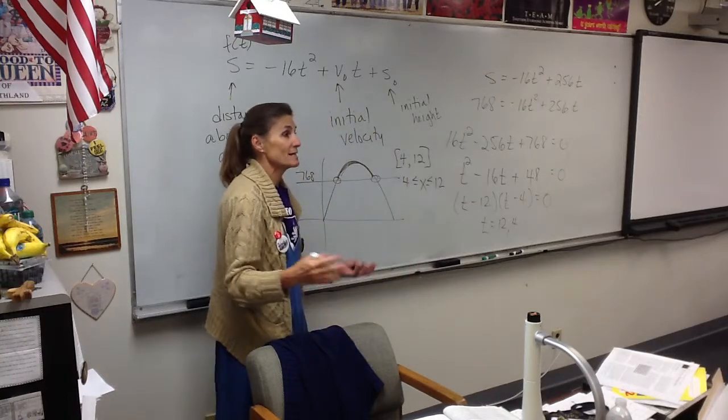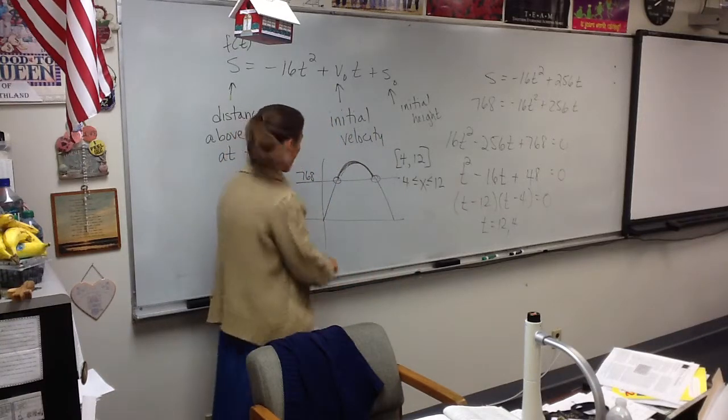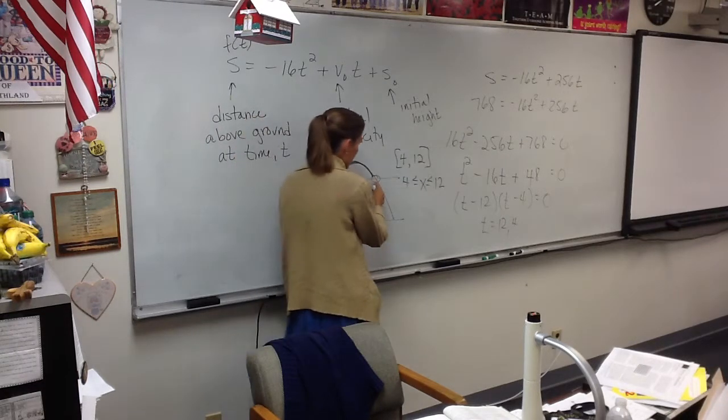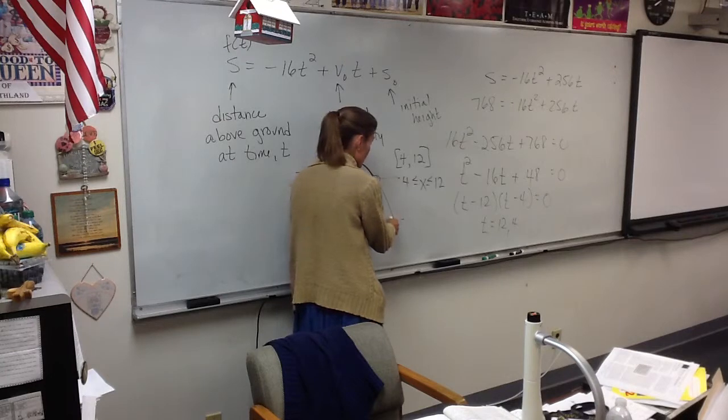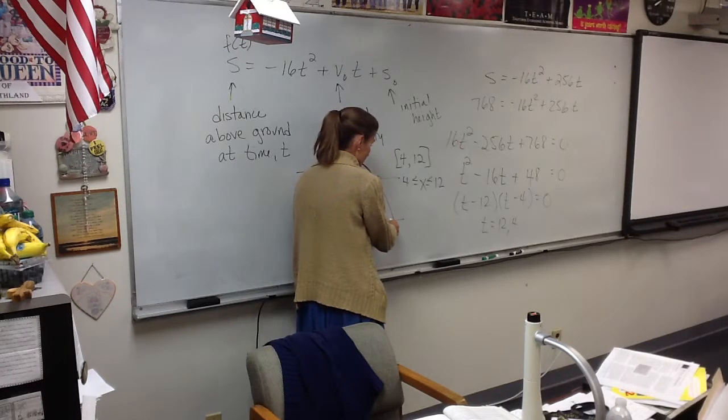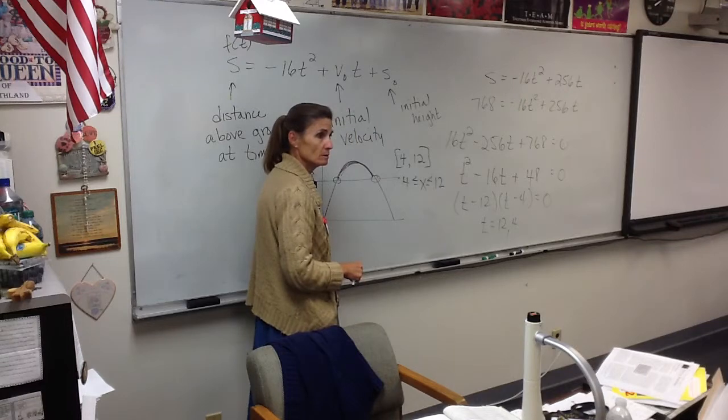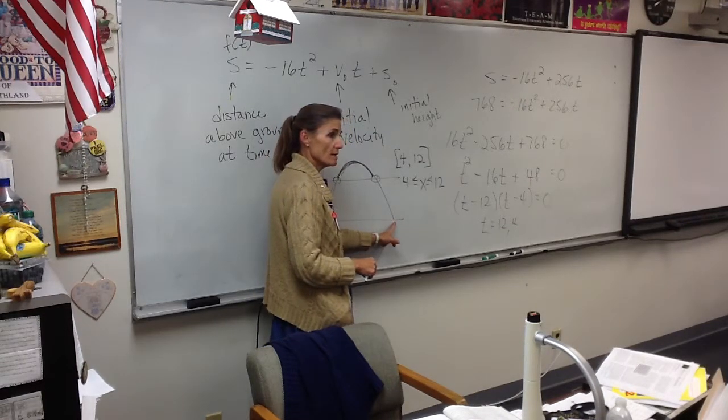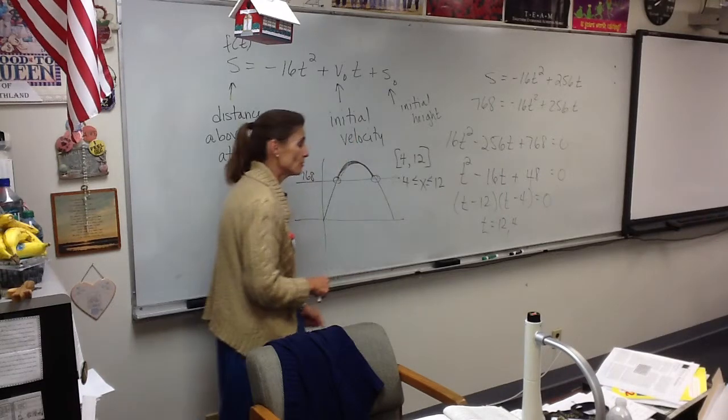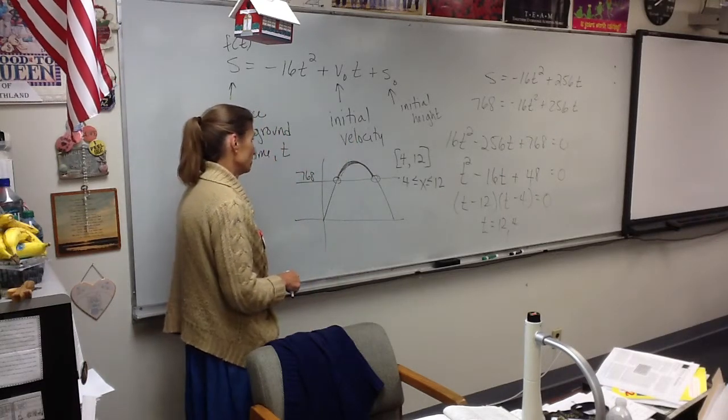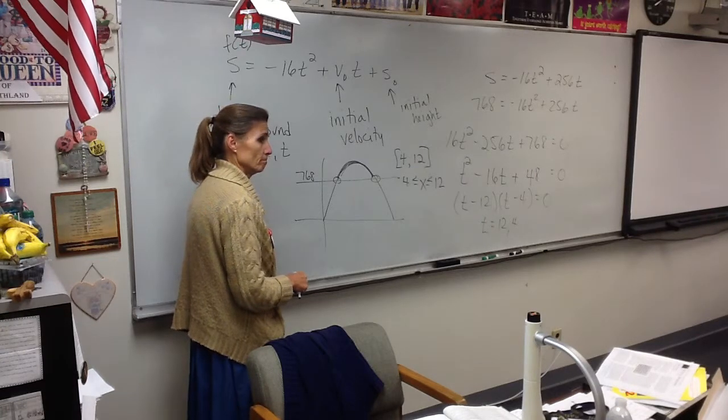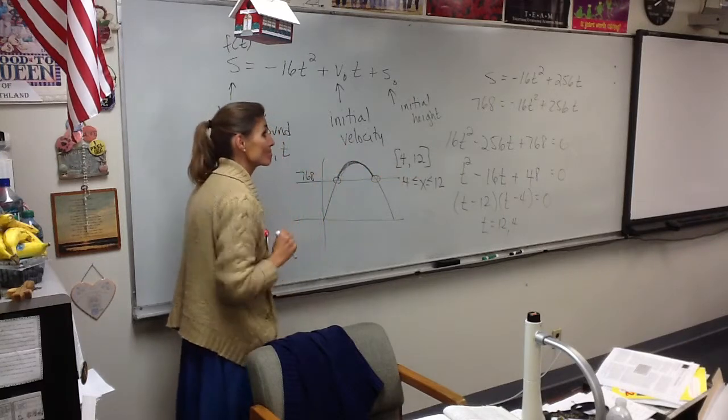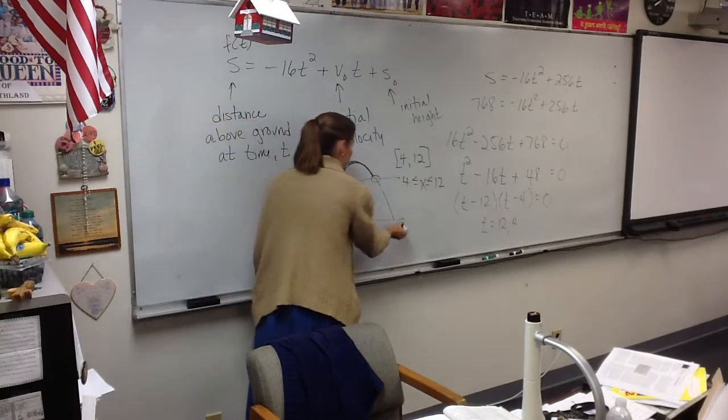Okay. Likewise then, the next question is when is it less than 768? Well, that would be everything from 0 to 4, and then everything from 12 to, uh-oh, now wait a minute. What do I need to figure out? When it ends. Can I do that? Or do I have to do a bunch of work? Lane says if it took 4 seconds to get to 768, it's going to take 4 seconds to come back down. Bingo. This is 16.